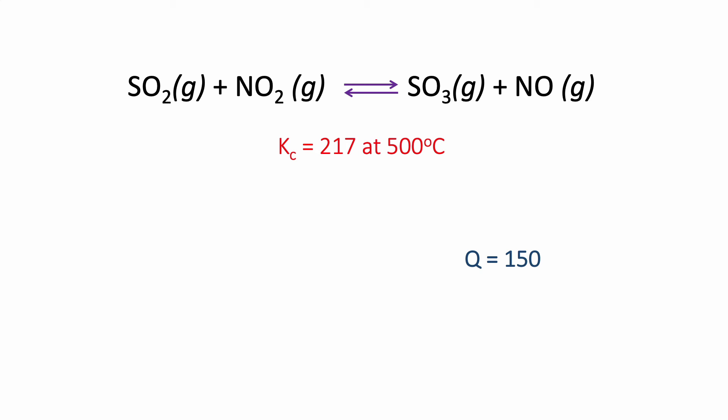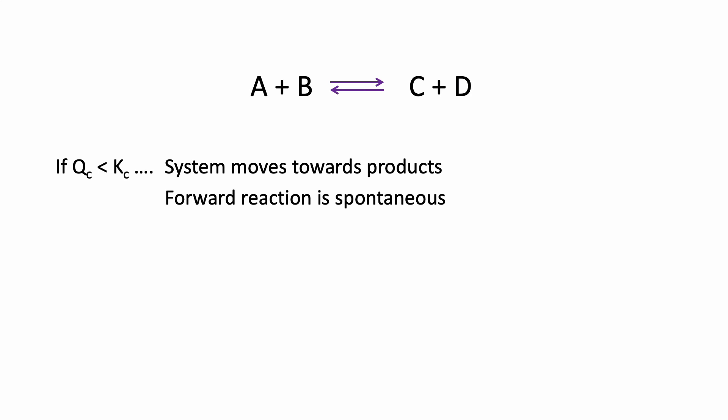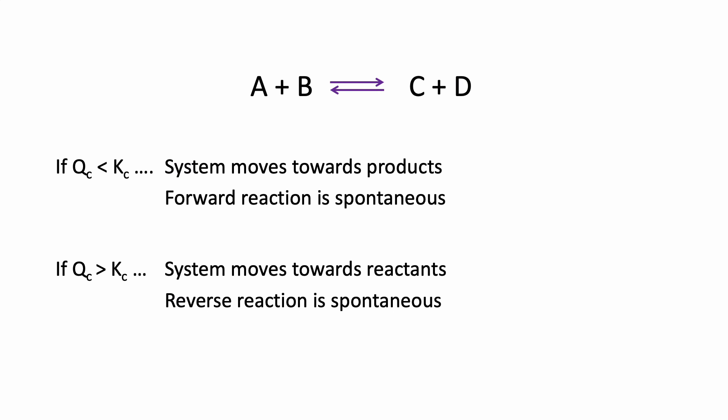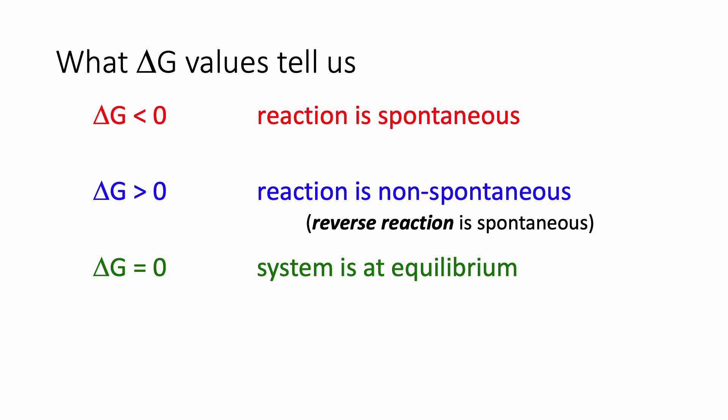For this particular reaction, depending on the concentrations of products and reactants, either the forward or the reverse reaction could be spontaneous, but never both. If Q is less than K, the system moves towards products — the forward reaction is spontaneous and the reverse is not. If Q is greater than K, the system moves towards reactants — the reverse reaction is spontaneous and the forward reaction is non-spontaneous. Back to the chart: the reaction is spontaneous if delta G is less than zero. If delta G is greater than zero, the reaction is non-spontaneous, meaning the reverse reaction is the one that's spontaneous. If delta G equals zero, the system is at equilibrium.